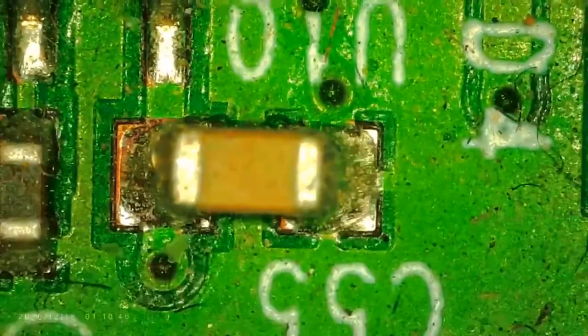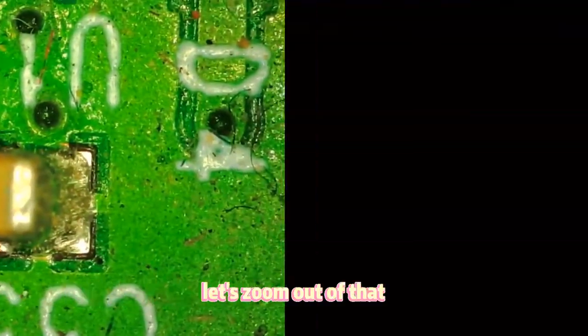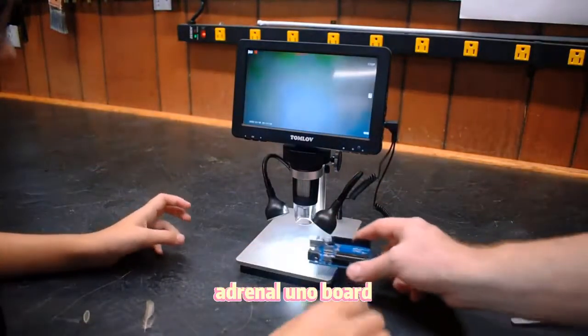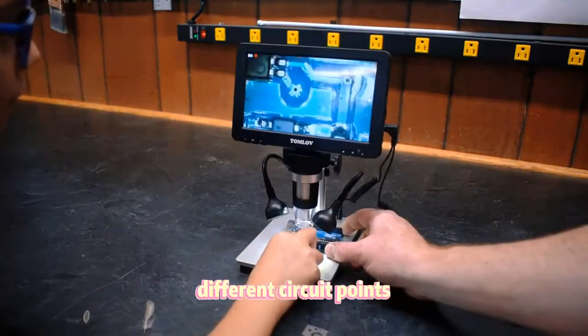This is what a car looks like. You're funny. Alright, let's zoom out of that. Now let's do the Arduino Uno board, a different circuit board.